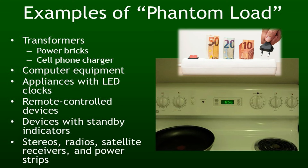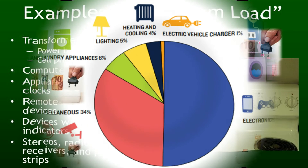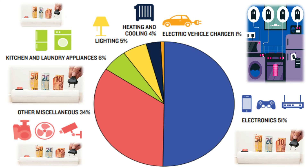Places in your home where phantom loads may be lurking: phone and other portable device chargers constantly draw some power. Devices with digital clocks. Entertainment devices like TVs, DVRs, VCRs, Blu-rays, CD players, radios. Office equipment such as computers, computer displays, printers, scanners, fax machines, copiers.